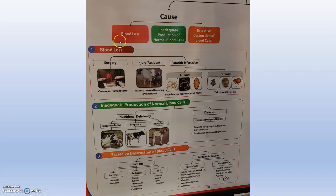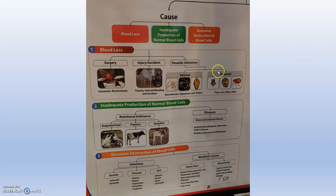Dealing with blood loss first — this can appear in any surgery such as cesarean section or ruminotomy, where there will be huge blood loss, resulting in anemia. Next is injury or accident due to any trauma or internal bleeding. Next is parasitic infestation, where internal and external parasites suck blood and nutrients, causing the parasites to grow but decreasing the general condition of the animal. These include roundworms, tapeworms, flukes, ticks, lice, mites, and fleas.